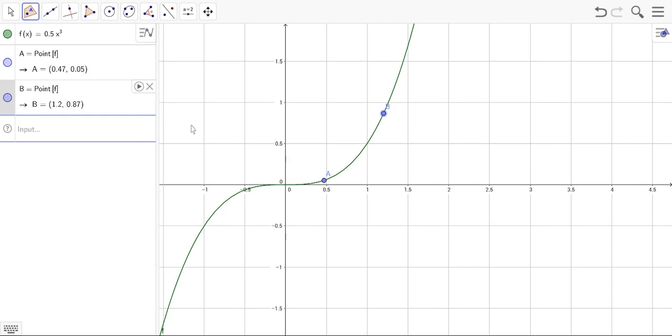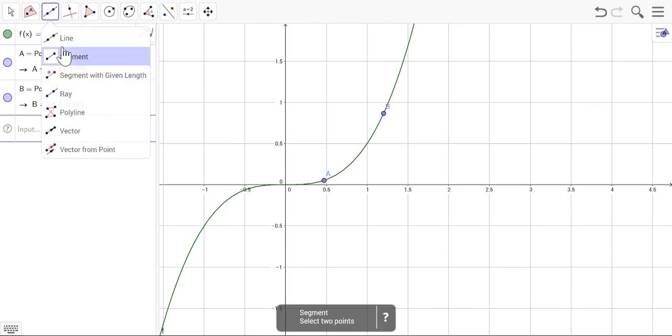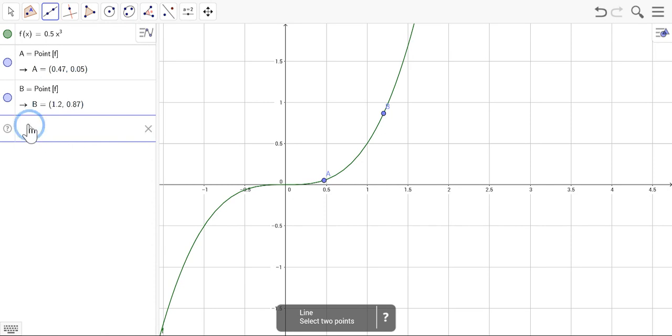Now we want a line between A and B. There is a line tool. If I click on there, I can click on line and then select the two points, or you can go to the input.